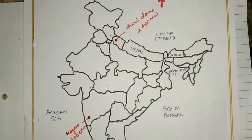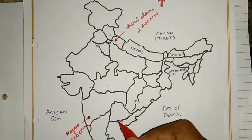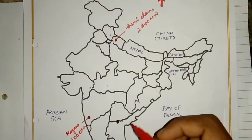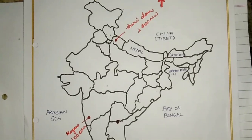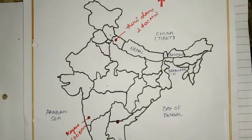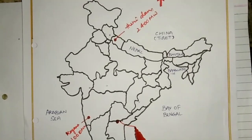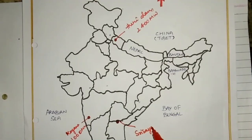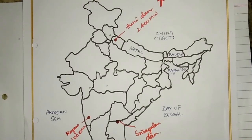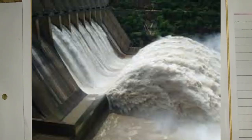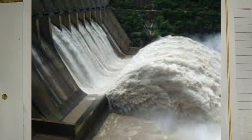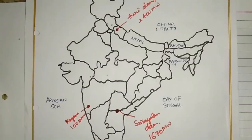The third dam is the Shree Salem Dam. This is the Shree Salem Dam located in that region.